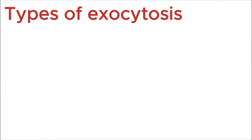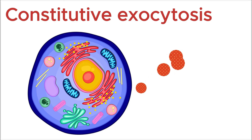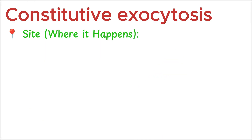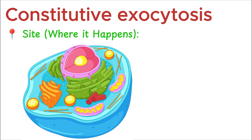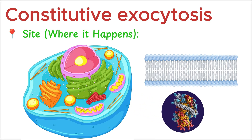Constitutive exocytosis is a continuous process where materials are secreted out of the cell without any external signal. It happens by default in all cells to maintain normal functions. It occurs in all eukaryotic cells, especially in cells that are constantly renewing their membrane or releasing proteins regularly.